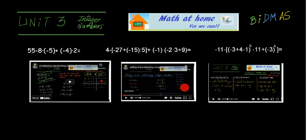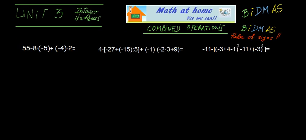Also watch the video on how to add and subtract integer numbers for simple operations, and the first part of this video that explains combined operations with easier examples — it can be considered the first part of this video. I also recommend you revise the rule of signs and the hierarchy of operations. Anyway, let's go and solve the operations. You can stop the video now if you want to try these three examples yourself, then check your solution.